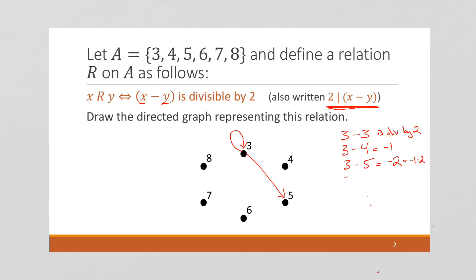And I can just keep going through this. 3 minus 6 is 3, not divisible by 2, minus 3. 3 minus 7 is negative 4, now that is divisible by 2.